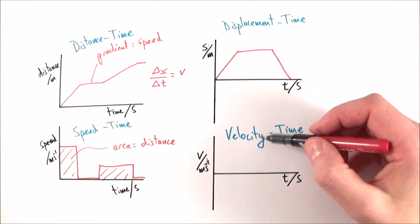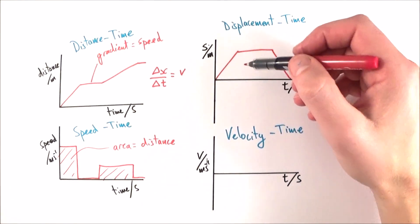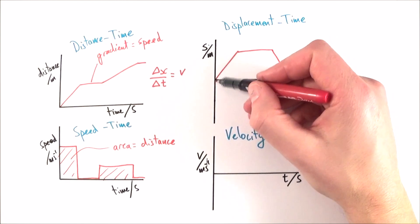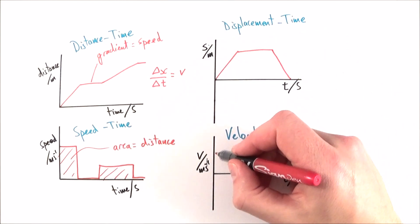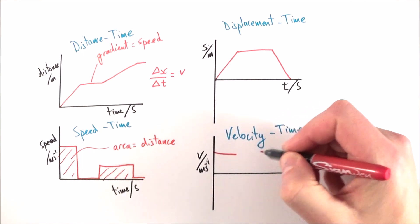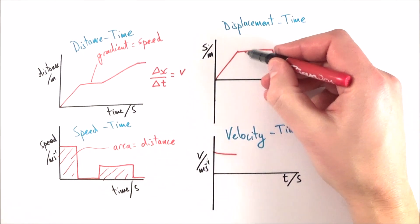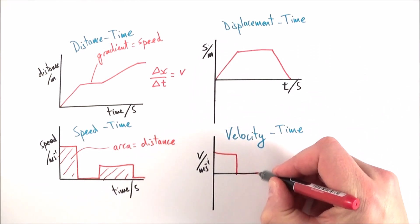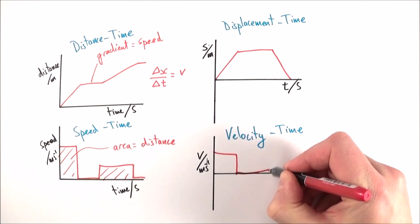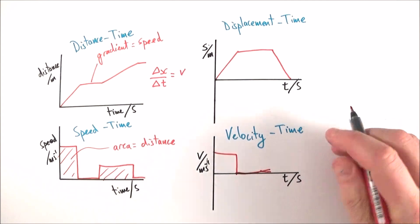Now in terms of the velocity, again, the velocity time graph is a graph of the gradient of this. So for the first time, we have a positive constant gradient, which means you have a positive constant velocity. Here they're not moving anywhere, so the velocity must be zero. And I'm just going to draw that along this axis, quite poorly as you can see.